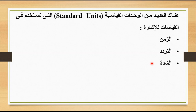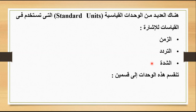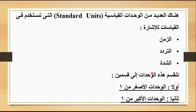لما بنيجي نتكلم عن الوحدات دي، بنقسمها لقسمين رئيسيين. فتنقسم هذه الوحدات إلى القسمين: وحدات بتبقى أصغر من الواحد، وفيه وحدات أكبر من الواحد. يبقى عندي وحدات أصغر من الواحد، وثانياً الوحدات الأكبر من الواحد.